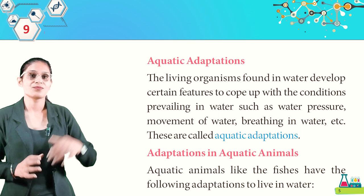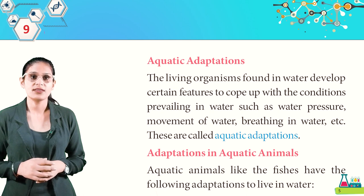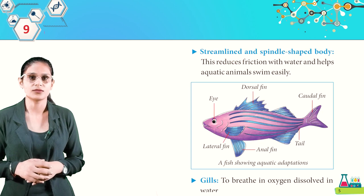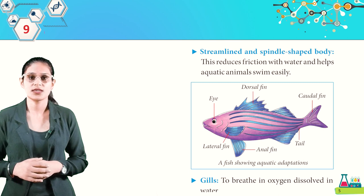Living organisms in water develop certain features to cope with water pressure and breathing in water — these are called aquatic adaptations. Aquatic animals like fishes have a streamlined, spindle-shaped body that reduces friction with water and helps them swim easily.